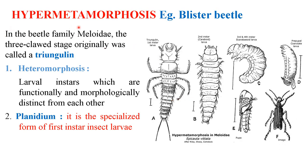The next one is hypermetamorphosis. Hyper means extra and metamorphosis means morphological changes — here the extra morphological changes occur. The example is the blister beetle, which has an extra instar called the triangulin, which is the first instar of the blister beetle. Tri means three and unges means claw; the triangulin larvae possess three claws on their foot. When studying hypermetamorphosis, we must know two terms: heteromorphosis and planidium.